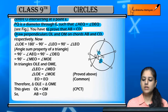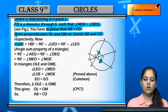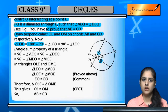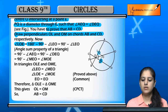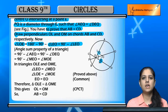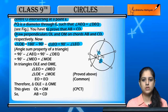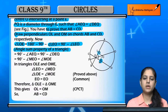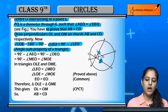Looking at angle LOE: since OL is perpendicular to AB, angle OLE is 90 degrees, so by the angle sum property, angle LOE equals 90 minus angle LEO, which is 90 minus angle AEO. Similarly, angle MOE equals 90 minus angle MEO.